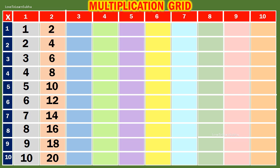Table of 3. 3 1s are 3. 3 2s are 6. 3 3s are 9. 3 4s are 12. 3 5s are 15.